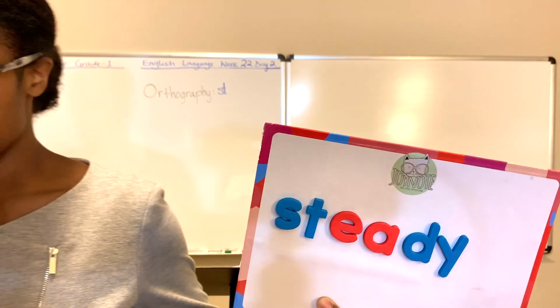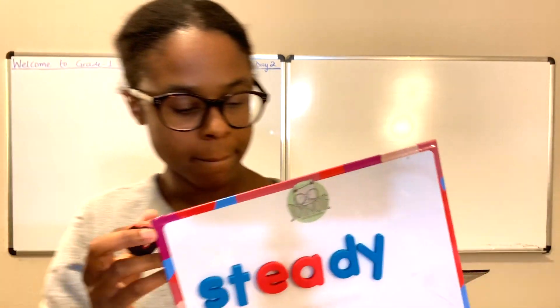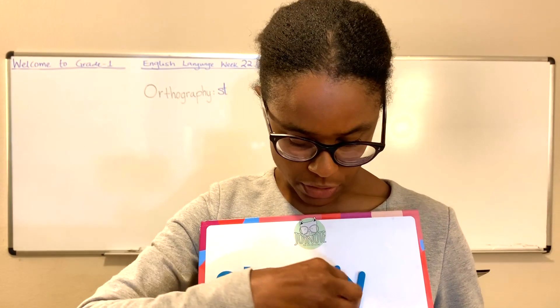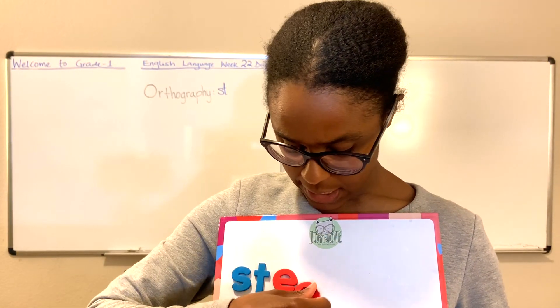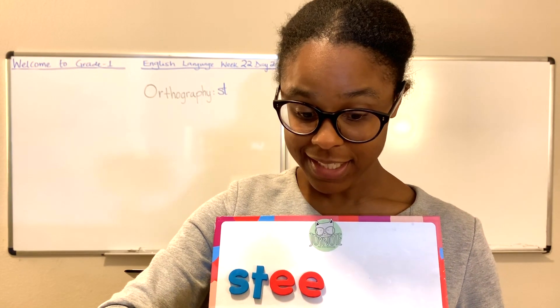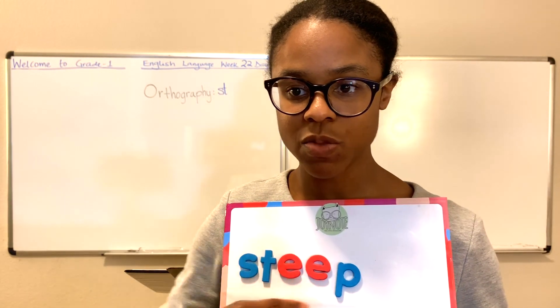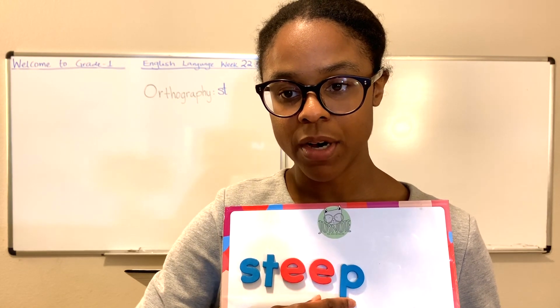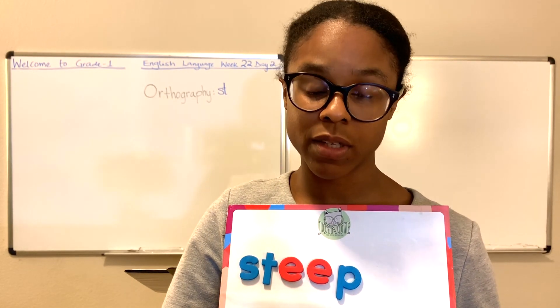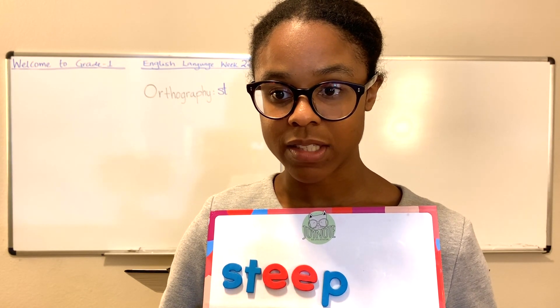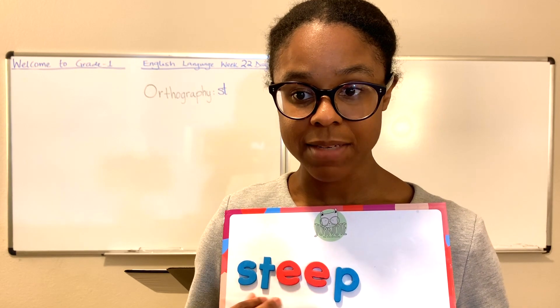Let's get another E word and try this: S-T-E-E-P. Have you seen this word? Steep. We talked about the double E some time ago as well. So you have S-T-E-E-P — steep. The cliff was steep. It was a steep climb. Steep.